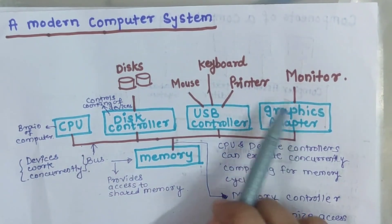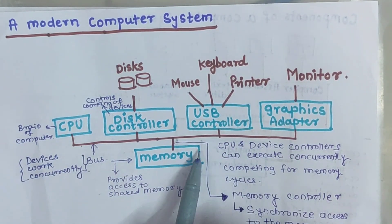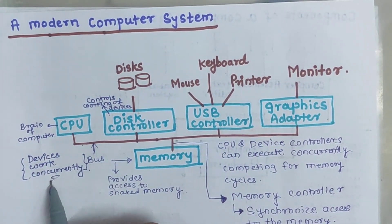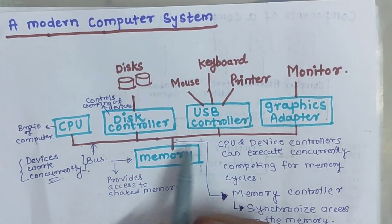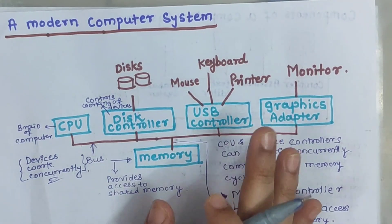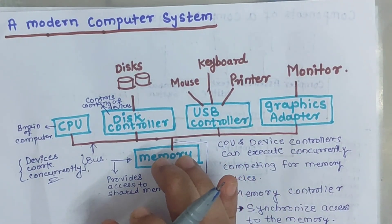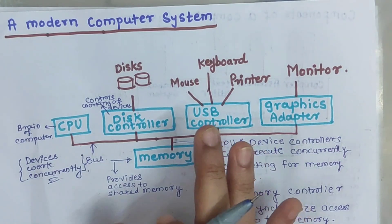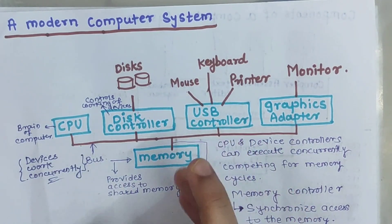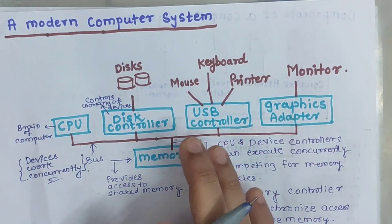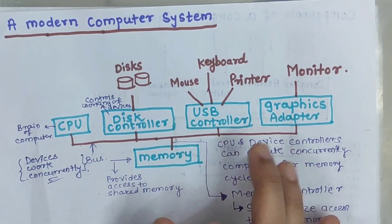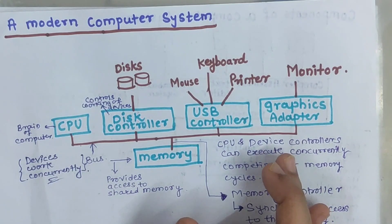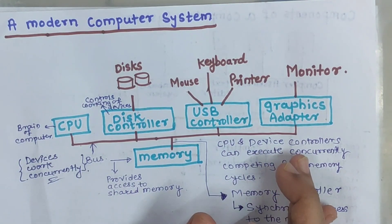All these devices concurrently access the memory through the common bus. The term concurrently means they can simultaneously access the memory. For example, whenever you are accessing the system and typing something in the notepad, your monitor is also working and your keyboard is also working — that is, multiple devices can work simultaneously, concurrently in the system.